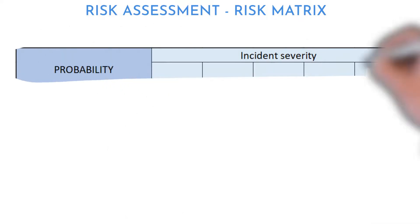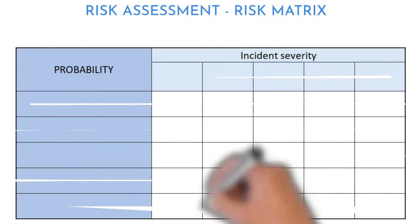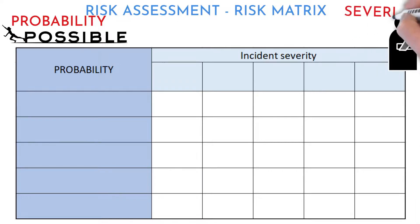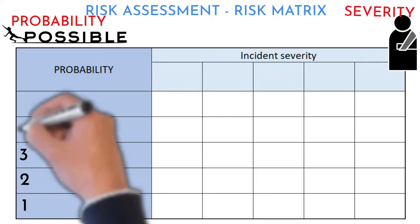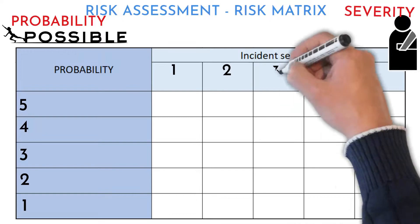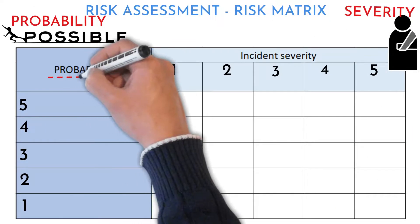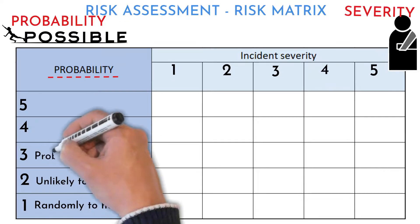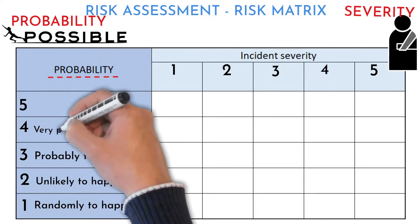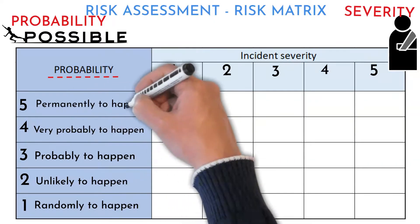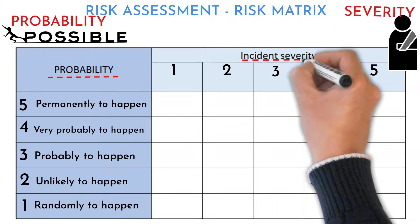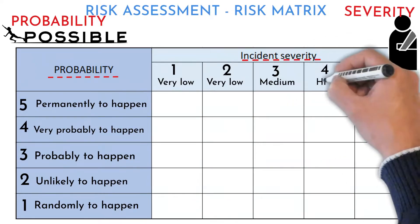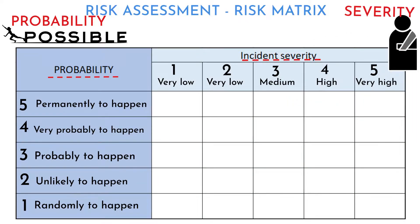There are two criteria in risk seriousness evaluation: incident probability and consequences severity. Each criterion has five categories. Probability categories are: randomly to happen, unlikely to happen, probably to happen, very probably to happen, and permanently to happen. Consequences severity categories are: very low, low, medium, high, and very high.